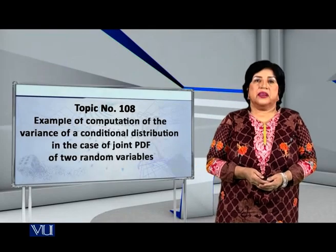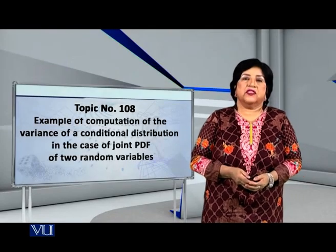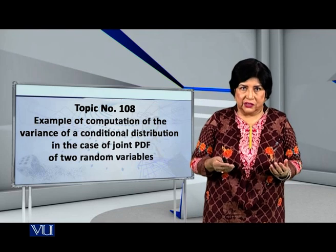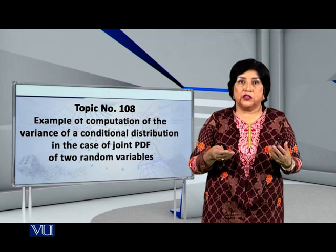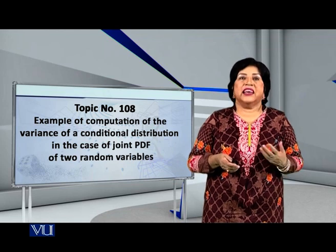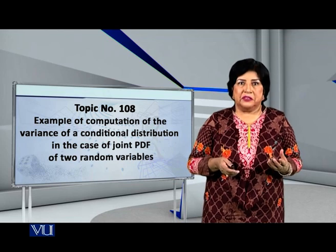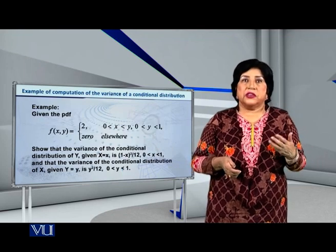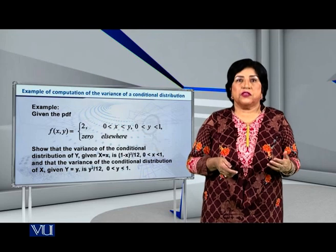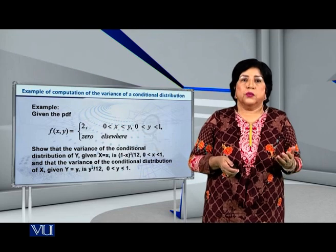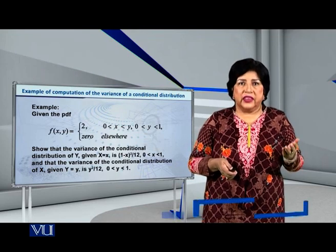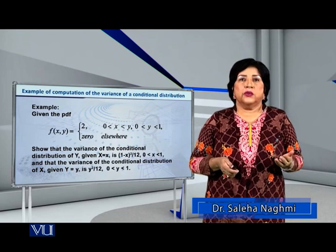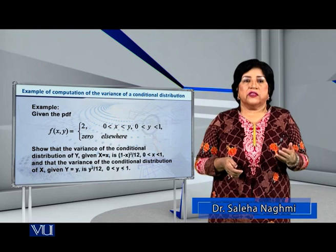Dear students, let me present to you an example of the computation of the variance of a conditional distribution in the case of a joint PDF of two random variables. The joint PDF that I am considering is f(x,y) = 2 where 0 < x < y and 0 < y < 1.